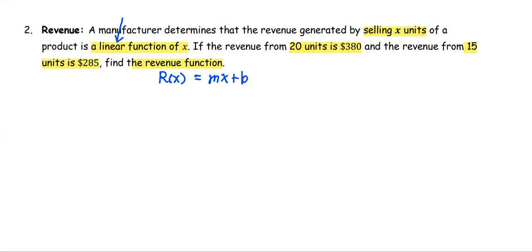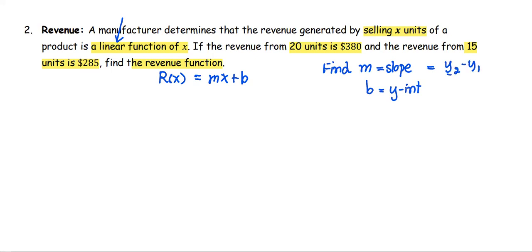To complete this function, we are going to find m, which is the slope, and b, which is the y-intercept. To find the slope, we use the formula from algebra: m equals y2 minus y1 over x2 minus x1. In this case, we don't have the ordered pairs provided directly, so we have to look at the information and put them together to find m, the slope.